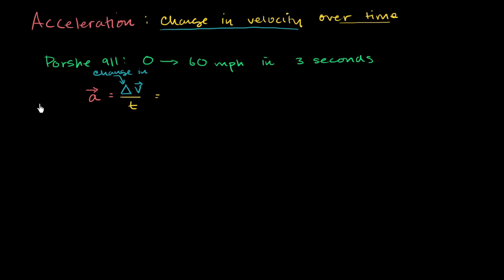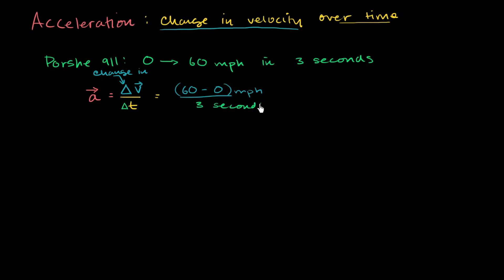So what's our change in velocity? Our final velocity is 60 miles per hour and our original velocity was zero miles per hour. So it's 60 minus zero miles per hour. And what is our time? Our change in time is three seconds. So you use the triangle or you don't use the triangle? It doesn't matter — it's just whatever number is there. So this becomes 60 divided by three, which is 20.